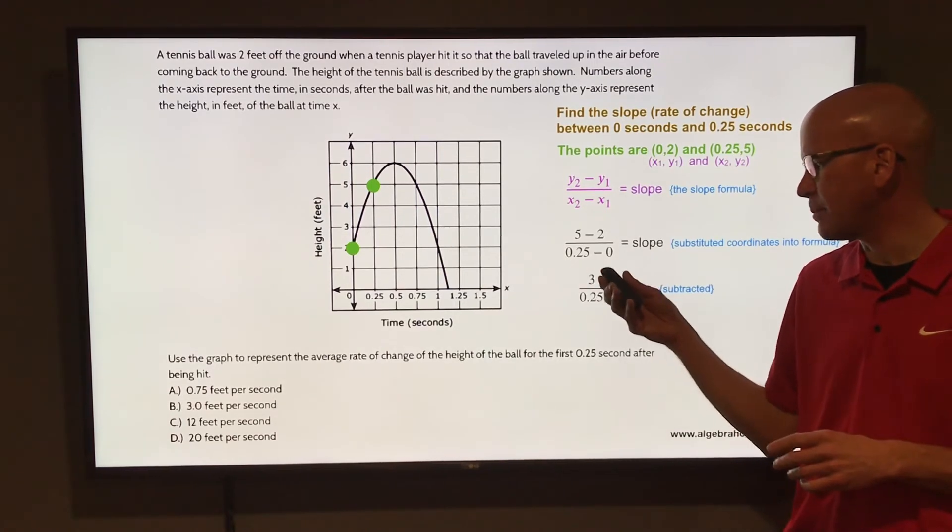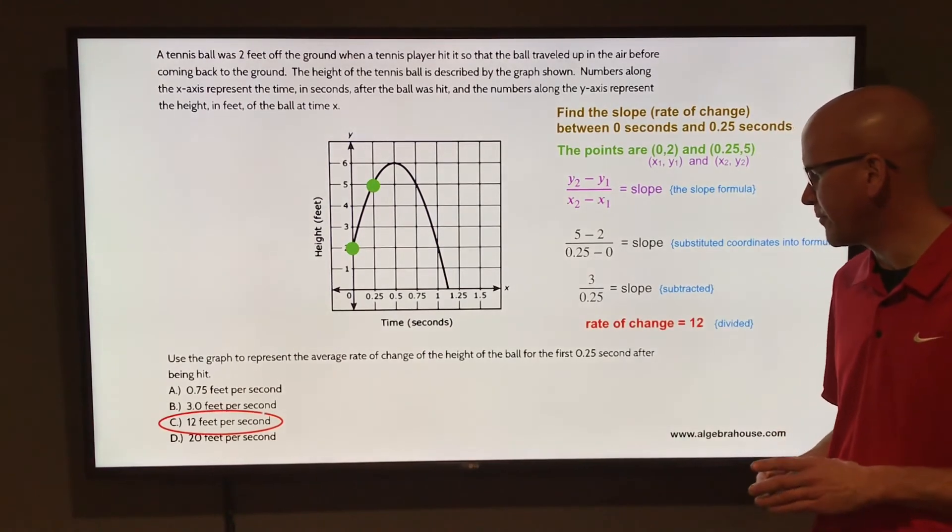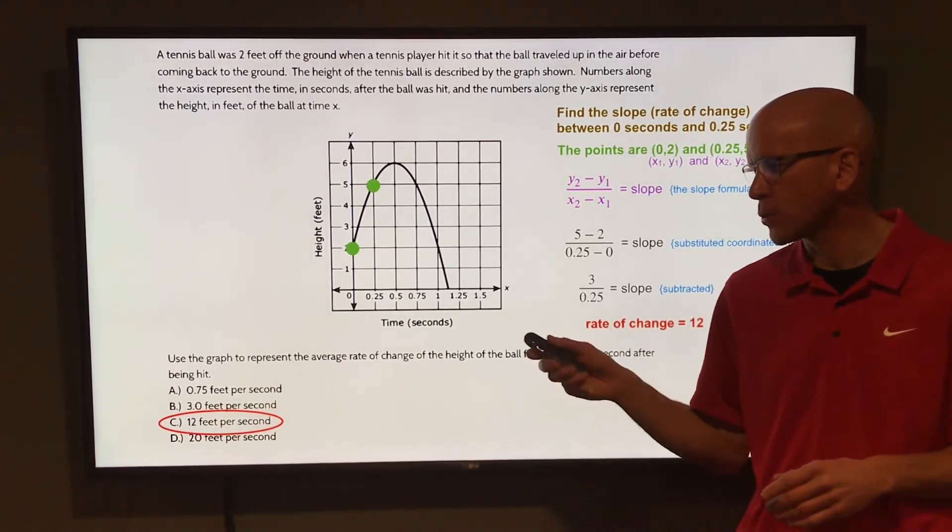And the change in x, 0.25 minus 0, is 0.25. Divide that, 3 divided by 0.25, that is a rate of change, or a slope, of 12.